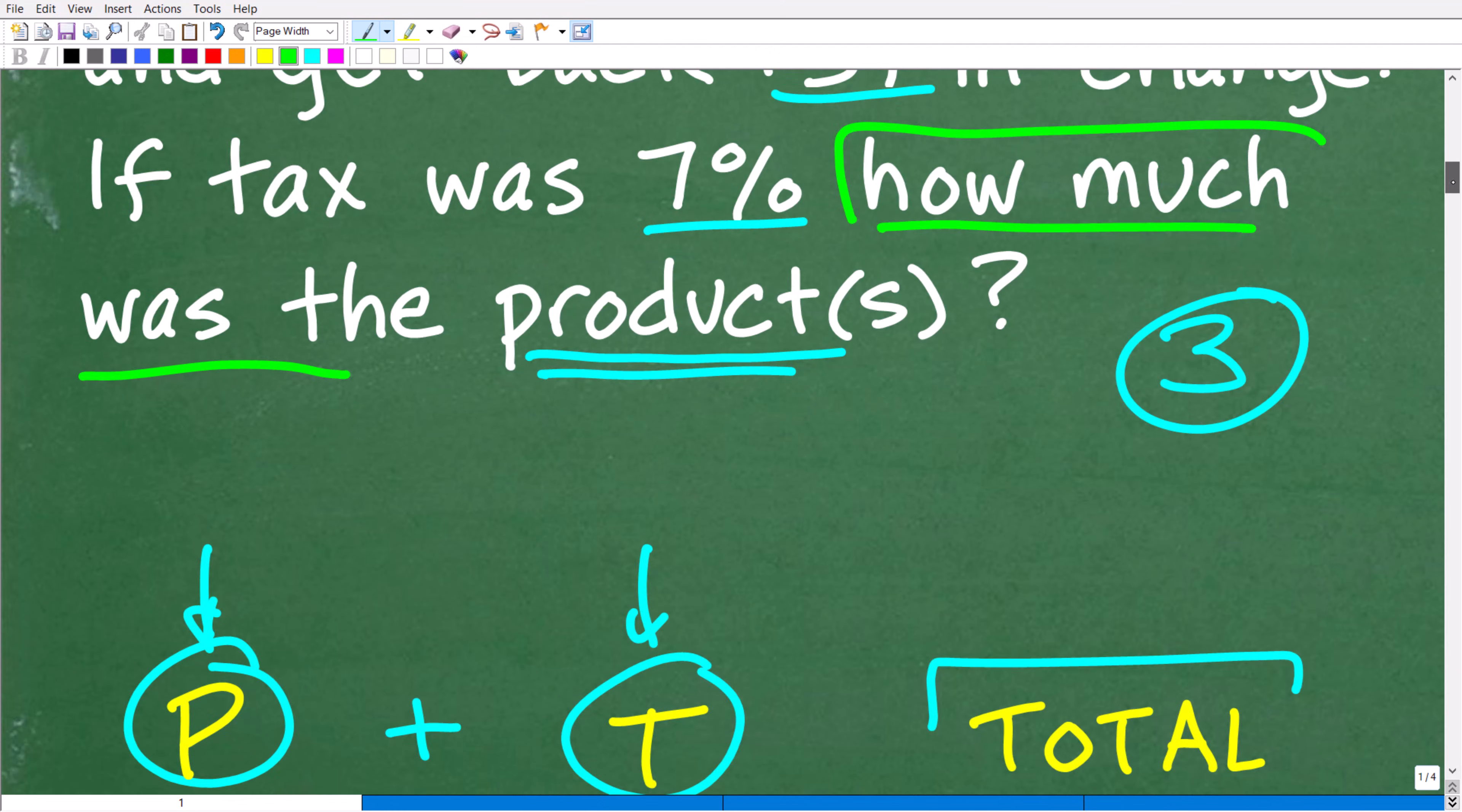And oftentimes, when you see a problem that says, how much was this, or how much was that, or anything along those lines, you can always think in the terms of a variable to represent that amount.